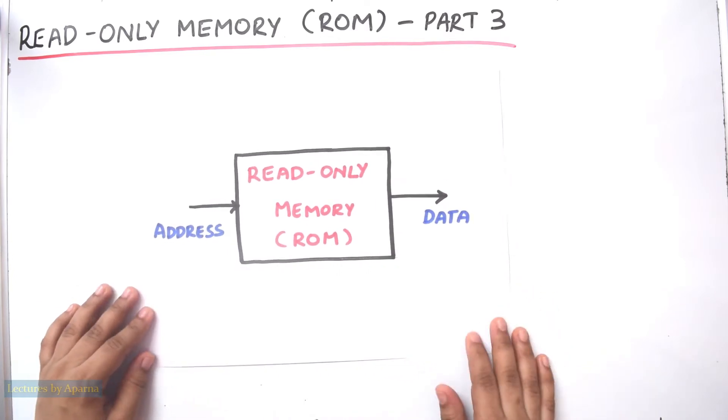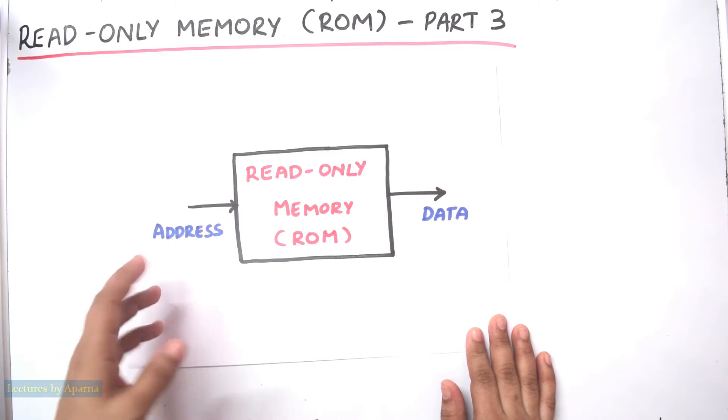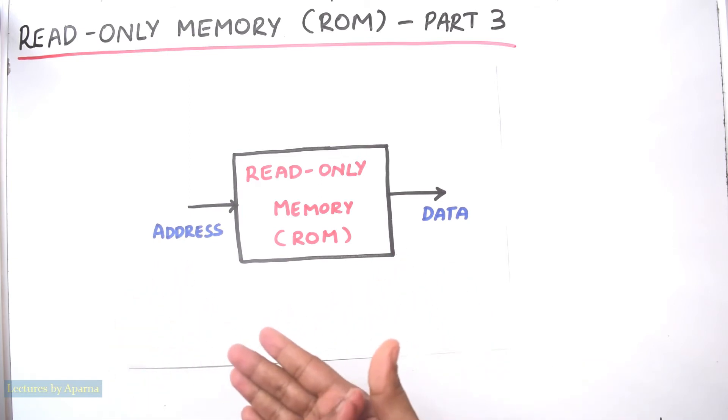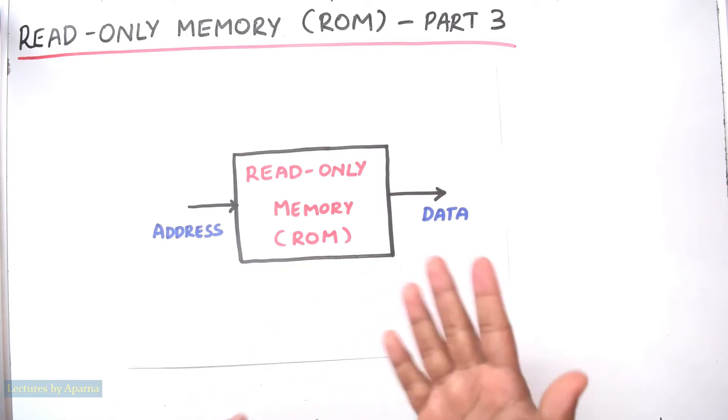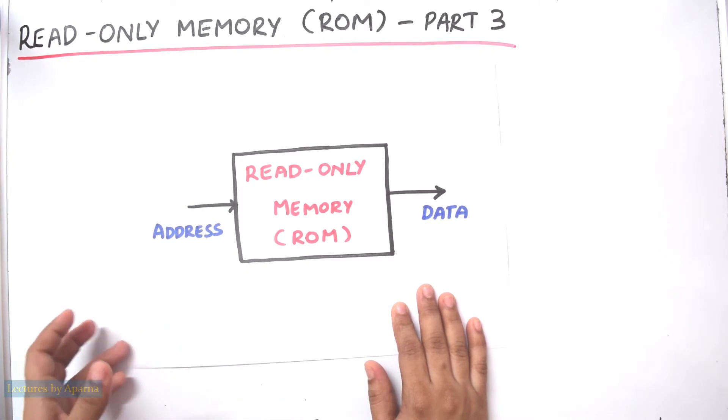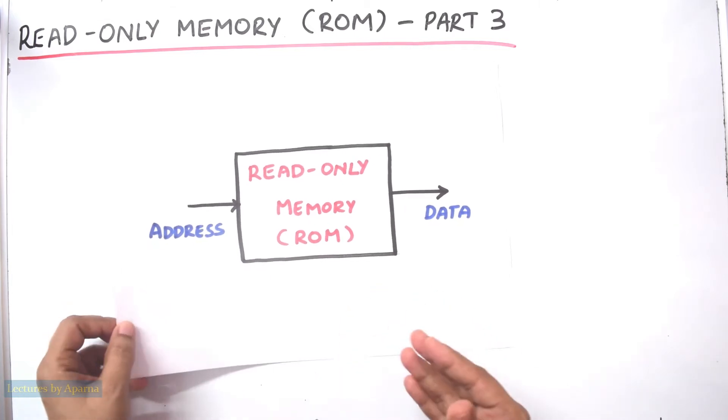ROM is read-only memory. You give an input memory location or the address of a memory location at the input of a ROM and you will get the data that is present in that particular address at the output. So everyone cannot write the data into the ROM. Only the programmer can write data into the ROM, that too through a programming kit or during the manufacturing process of the ROM. Hence the name says read-only memory because you can do only read operation with this.